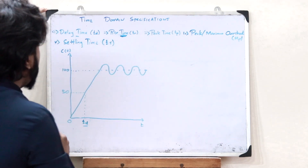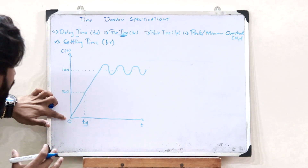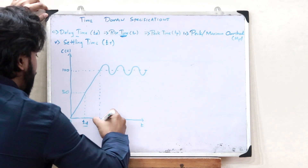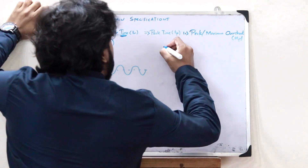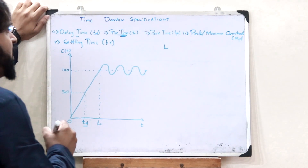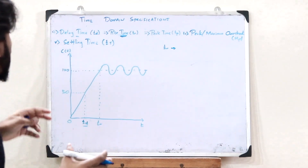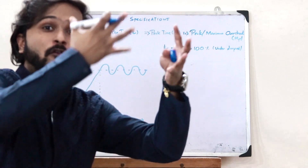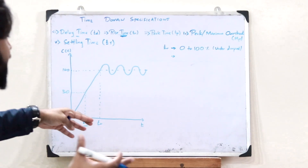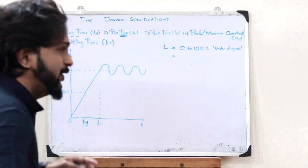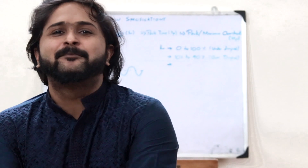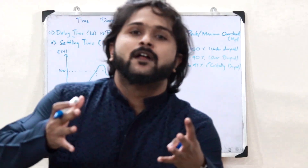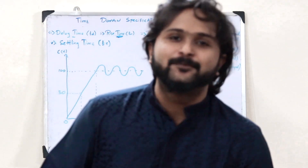Rise time is defined as the amount of time that is taken by a control system to reach from 0 to 100% of that particular value. The rise time TR is different for different cases of second-order control systems. In the case of an underdamped control system, it is the time required to go from 0 to 100%. For an overdamped control system, it is the time taken to reach from 10% to 90%. For a critically damped control system, it is the time taken to reach from 5% to 95% of the maximum value.